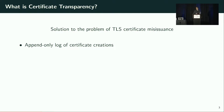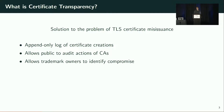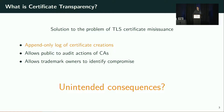It's simply a public append-only log of certificate creations, including the domains associated with each certificate. This allows the public to audit the actions of CAs and allows trademark owners to identify compromise of their own systems by observing a certificate creation that they did not request. While the certificate transparency system has undoubtedly added to the public's trust in the TLS ecosystem, there have also been unintended consequences that we wanted to study. The adoption of TLS on the web is constantly growing, and the amount of certificate authorities that support certificate transparency is also growing, leading CT to turn into a proxy log for all new website creations as they come online.